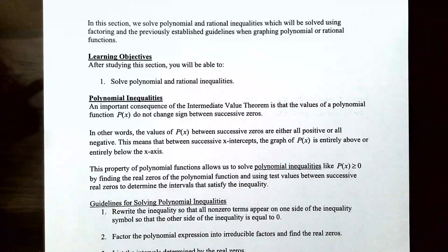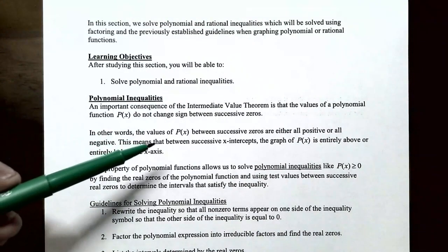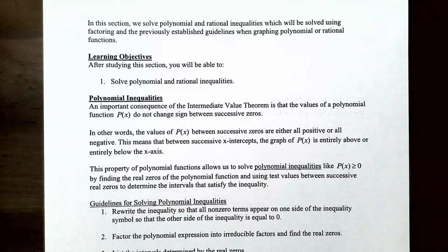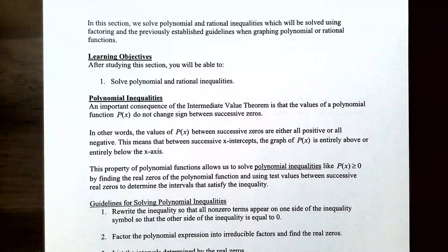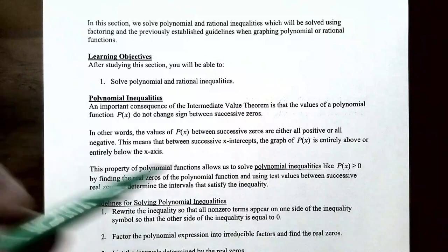Let's start with polynomial inequalities. An important consequence of the intermediate value theorem is that the values of the polynomial function P of x do not change sign between successive zeros. What that means is that the values of P of x between successive zeros are either all positive or they're all negative. That means if you have successive x-intercepts, the graph of P of x is entirely above or entirely below the x-axis.